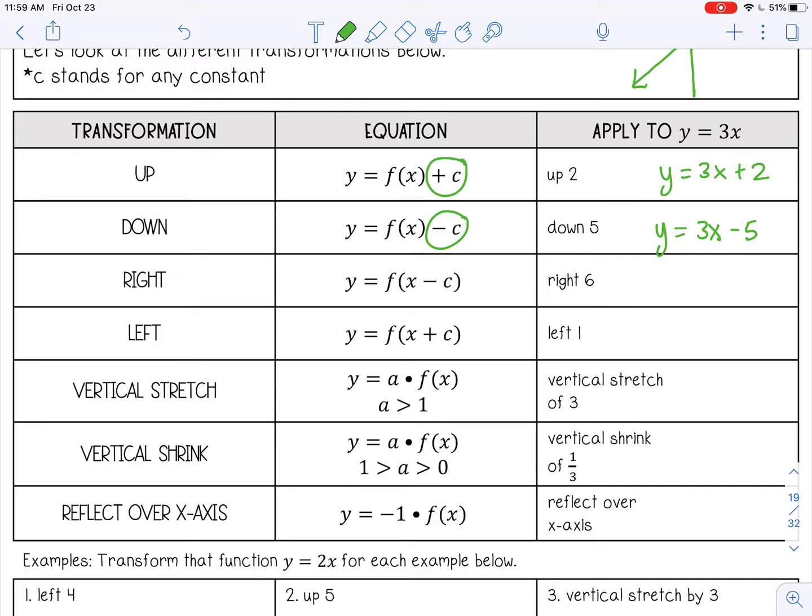If you want to move to the right, then you're going to actually subtract the amount you want to move. And you're going to put it in parentheses. So if I want to move right six, y equals three parentheses x minus six. So it's a little bit backwards than what you would think. It's always minus for right and then plus for left. And you can actually simplify that if you want to distribute that three. So 3x minus 18.